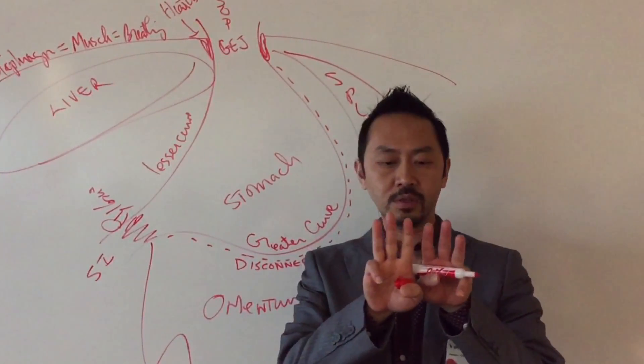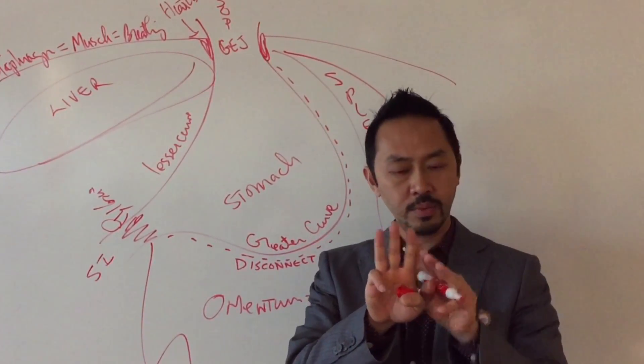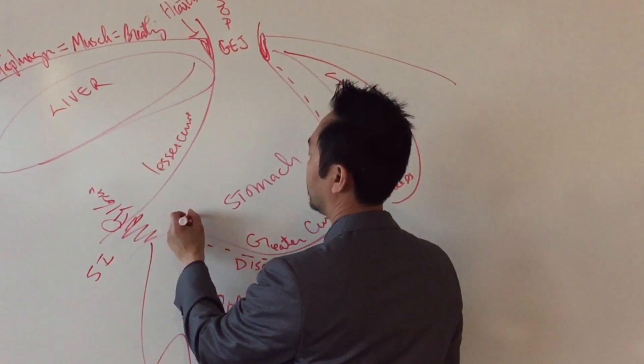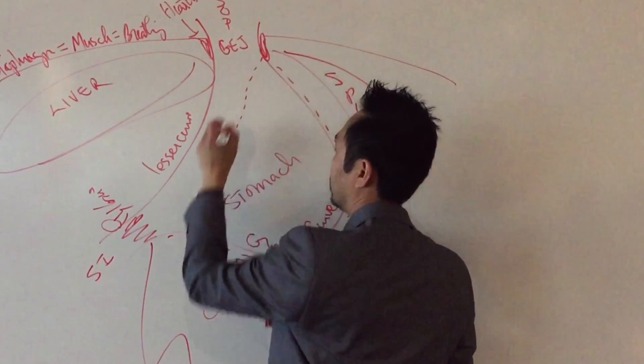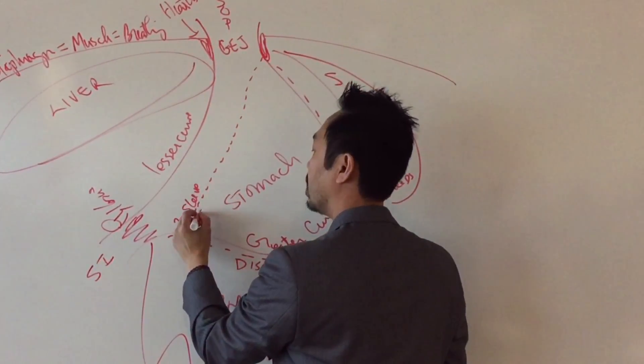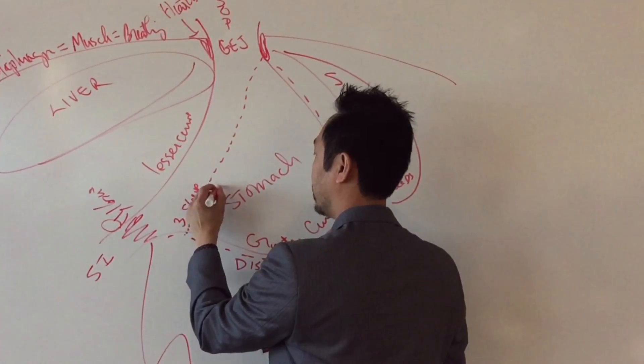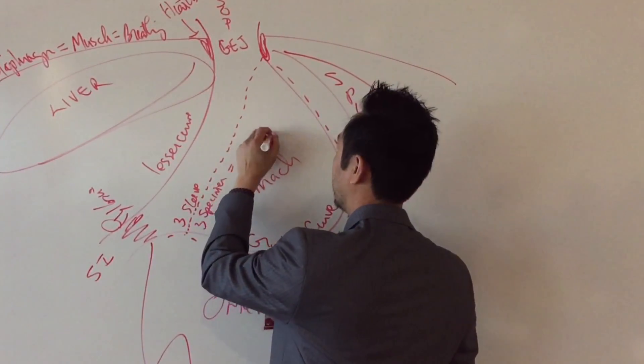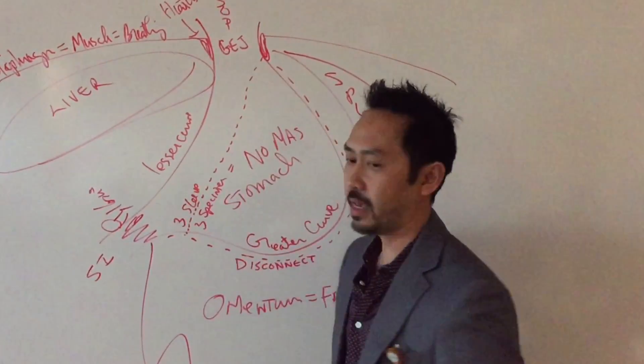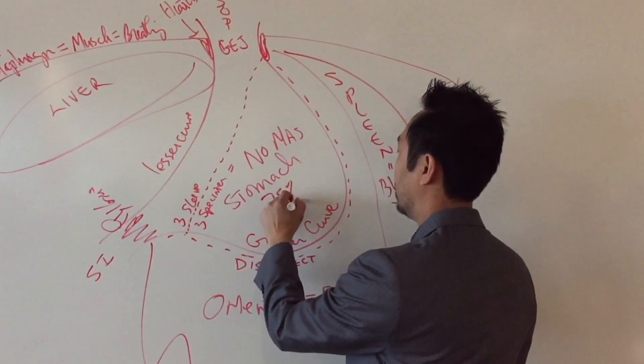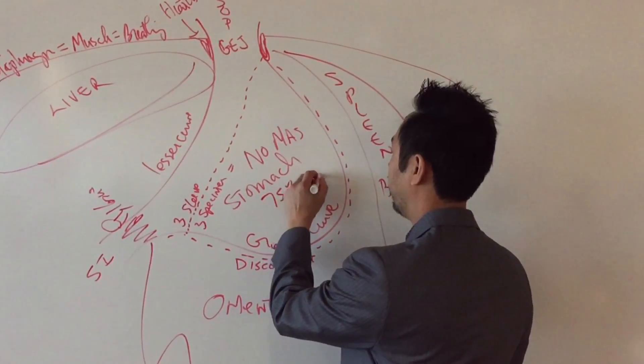Then I have a stapler. Fire six rows of metal titanium alloy staples. Cuts in the middle. So three stay. I usually start down here at your antrum. I go all the way up to your GE junction. So three rows stays on your sleeve side. Three on your specimen side. Why is it called the specimen? Because it's due. So no more stomach. I take out what percentage? 75%. 75% is gone. Removed.